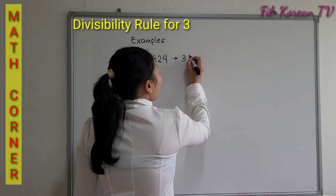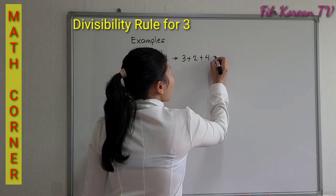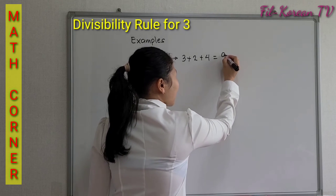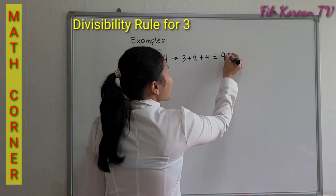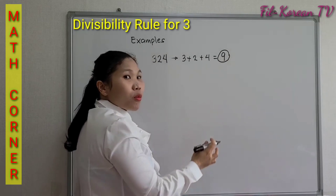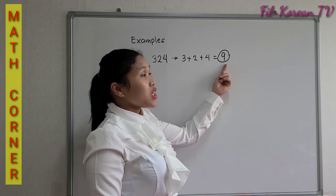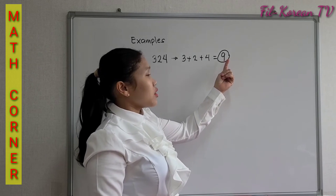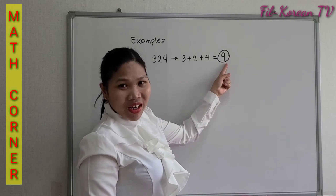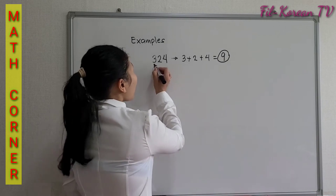3 plus 2 plus 4 equals 9. Since the sum is a multiple of 3 — meaning when we multiply 3 by itself we get 9, because 3 times 3 is 9 — so it is a multiple of 3, or can be divided by 3.